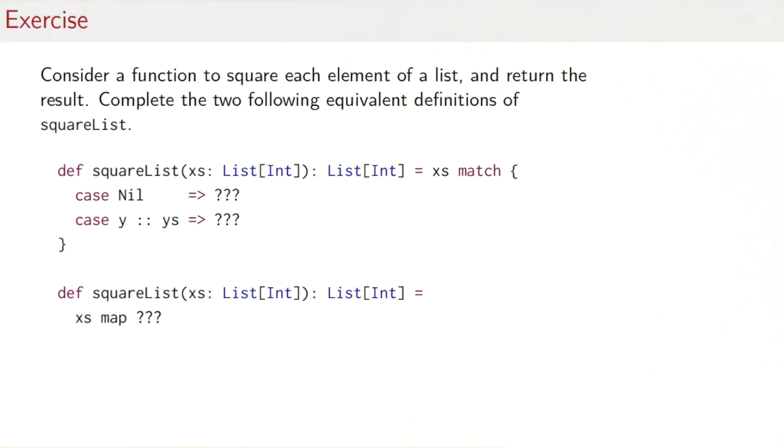Let's take a function squareList that squares each element of a list and returns the result. There are two possible ways to do that, either with pattern matching or using map. I invite you to try both possible ways by filling in the three triple question marks in the definition of squareList here and the definition of squareList down there.